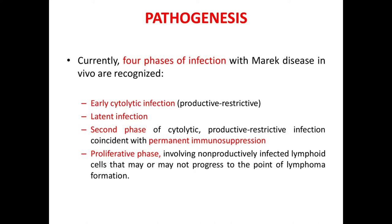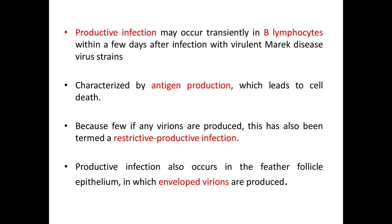Now let's move on to pathogenesis. Currently four phases of infection with Marek's disease in vivo are recognized: first is the early cytolytic infection; second is latent infection; third is the second phase of cytolytic-productive restrictive infection with permanent immunosuppression; and fourth is the proliferative phase, where non-productively infected lymphoid cells may or may not progress to the point of lymphoma formation.